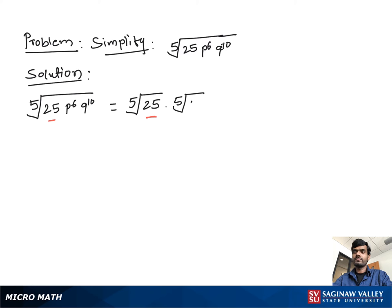Then we write the 5th root of p to the 5th times the 5th root of p, since p to the 6 equals p to the 5th times p. Similarly, the 5th root of q squared all to the 5th power gives us q squared, since q to the 10 equals (q squared) to the 5th.